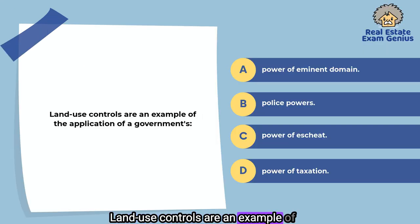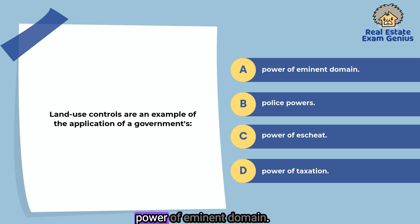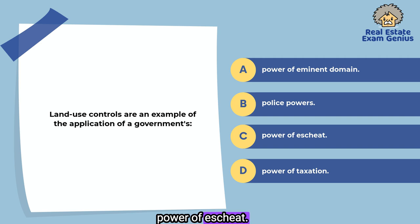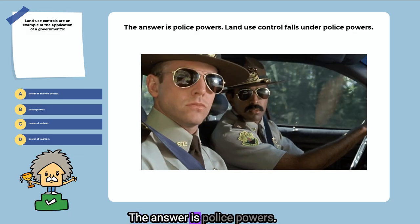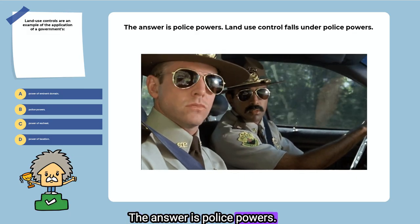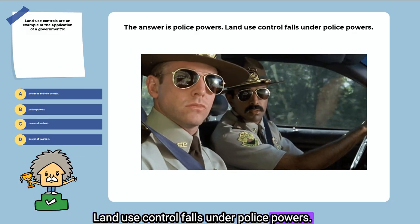Land use controls are an example of the application of a government's: power of eminent domain, police powers, power of escheat, or power of taxation. The answer is police powers. Land use control falls under police powers.